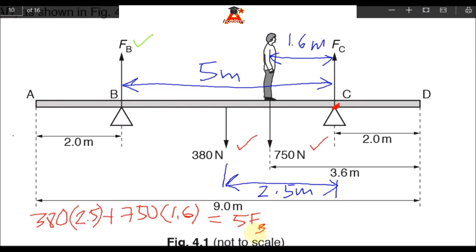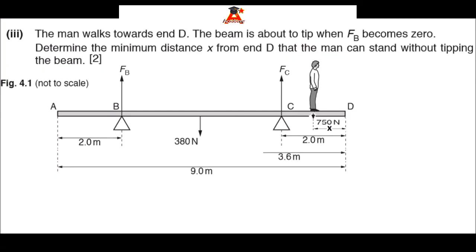This equation gives us FB equals 230 newtons. Now for item 3, we are asked to find the distance x that the man can stand as close to D as possible without tipping the beam. The condition given is that when FB becomes zero, the beam is about to tip, so we equate FB to zero to determine x.